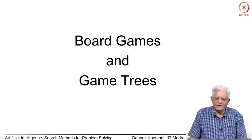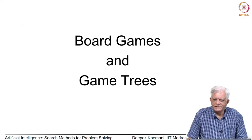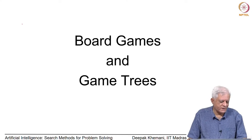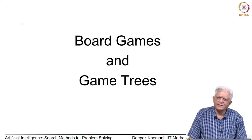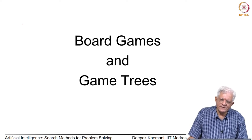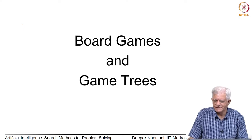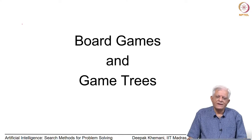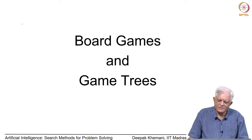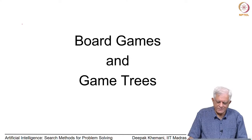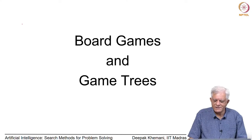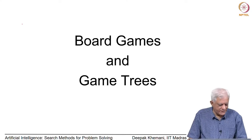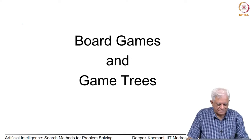So far we have looked at the field of study called game theory, which looks at rational behavior in multi-agent scenarios. Then we looked at a host of popular games and got some history about which games are played well by machines and which are not. In the subsequent lecture, we will focus on simpler games called board games and see how they are modeled as game trees and what algorithms are used for playing them.